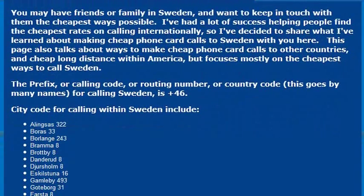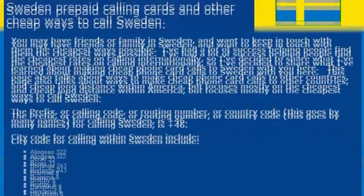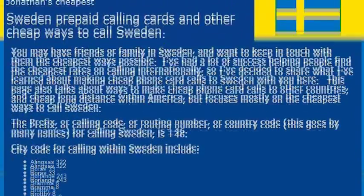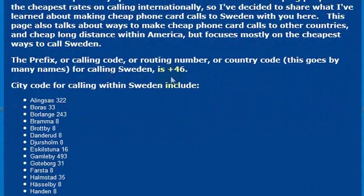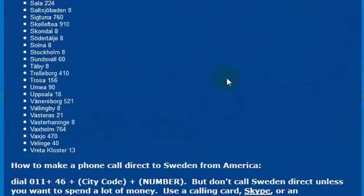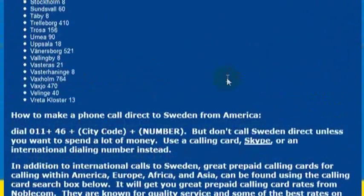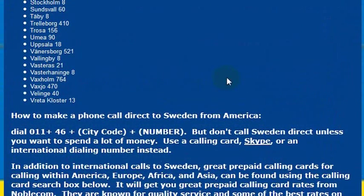When I go, I will definitely need to make some phone calls to make travel arrangements and make sure everything's all squared away. And in order to do that, I will need to know the country code for Sweden, which is 4-6. To make a phone call directly there from the United States, I would dial 0-1-1, which is the international dialing code, then 4-6, which is the country code.